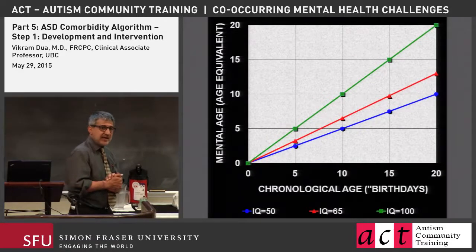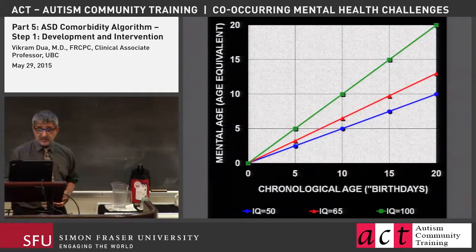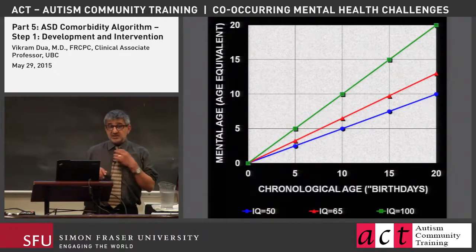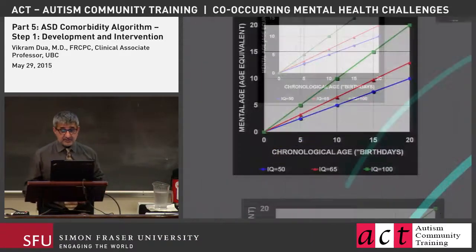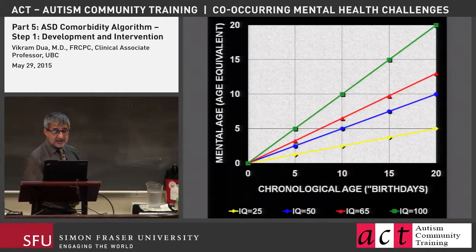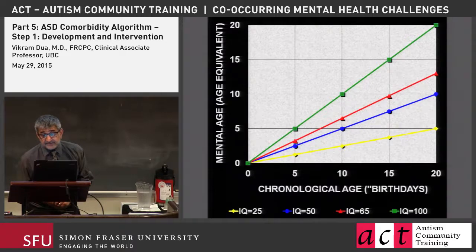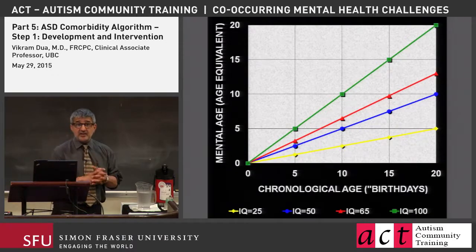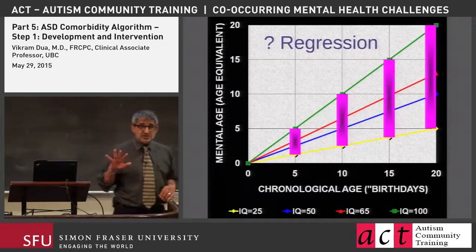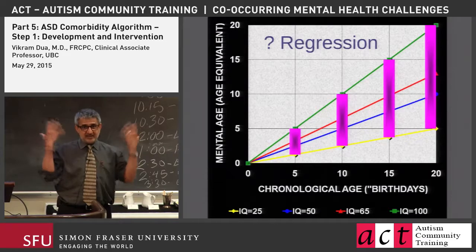For a child with an IQ of 50 — moderate intellectual disability — at age five they're more like a two-and-a-half-year-old, at age ten more like a five-year-old, and if things go well we can get this kid to a 10-year-old age equivalent by age 20. For a child with a severe intellectual disability and an IQ of 25, the gains are steady but on a different slope — by age ten they're acting like a two-and-a-half-year-old, and the ceiling by age 20 is a kindergarten level.